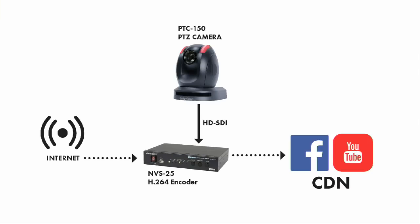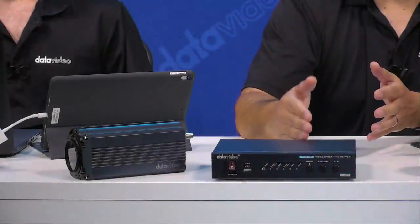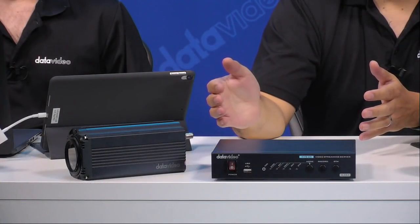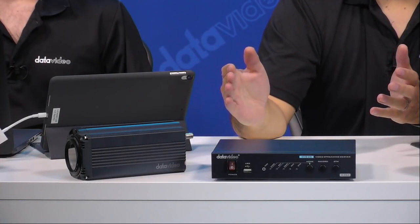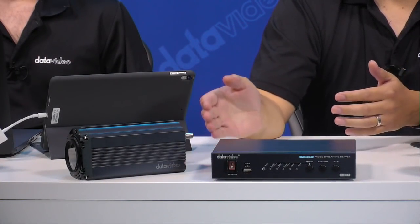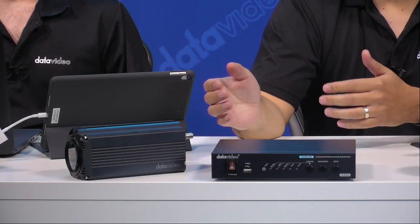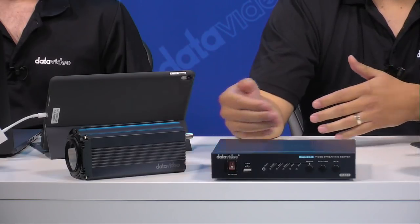The encoder will connect to your internet source—either your cable modem or a router that connects to a cable modem. From there, we're going to connect to Facebook to show you how we do a setup from start to finish.